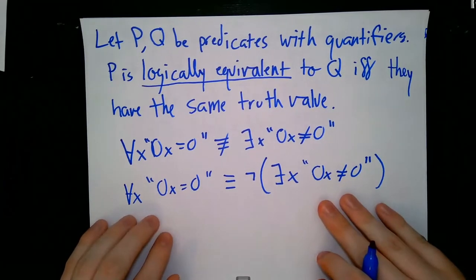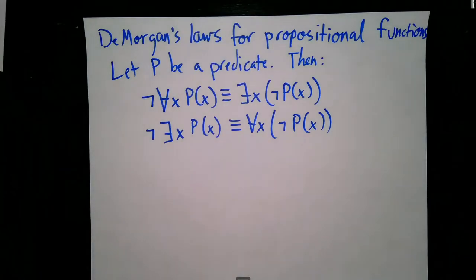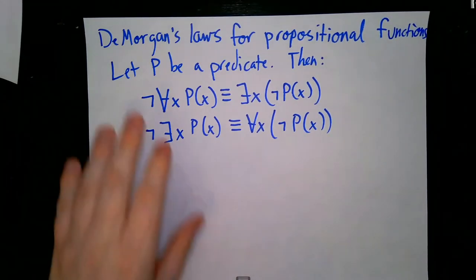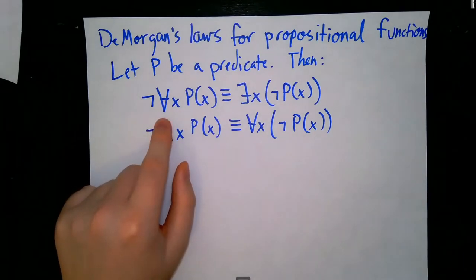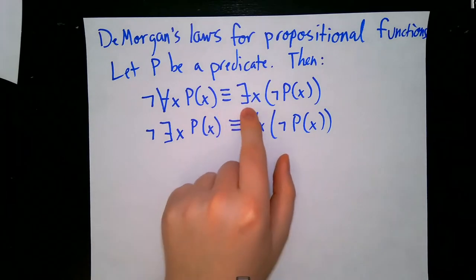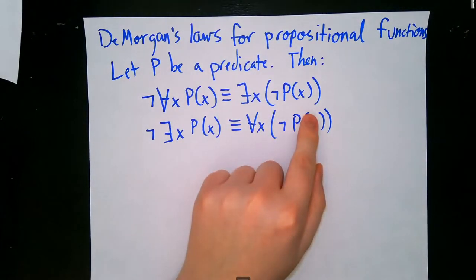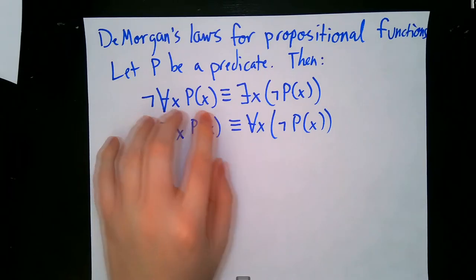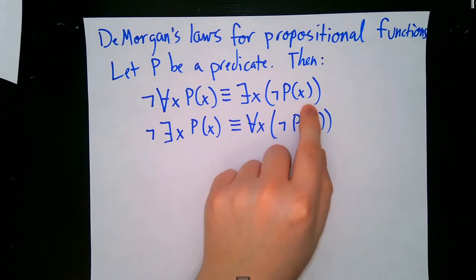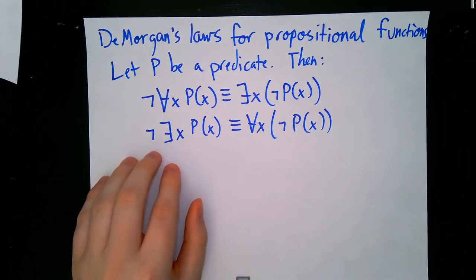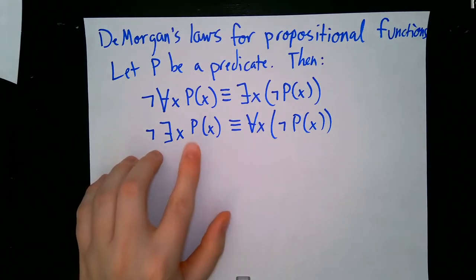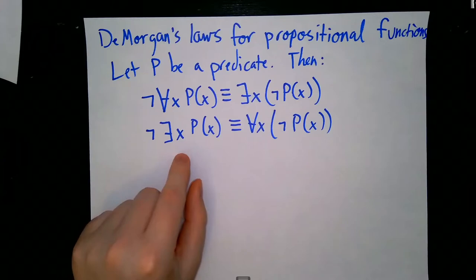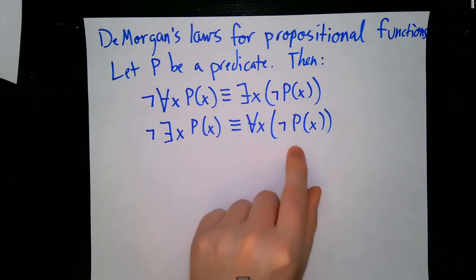De Morgan actually saw this kind of pattern and came up with De Morgan's laws for propositional functions — another word for predicates. He discovered that if we take the negation of ∀x, p(x), that's equivalent to saying ∃x such that p(x) is false. In other words, if it's not the case that every x makes p(x) true, then there must exist at least one x such that p(x) is false. Similarly, the negation of ∃x such that p(x) is equivalent to ∀x, not p(x) — if it is not true that there exists an x making p(x) true, then every x must make p(x) false.